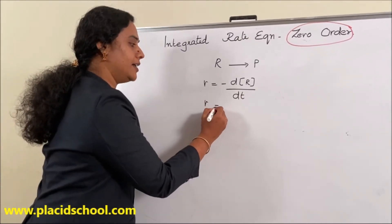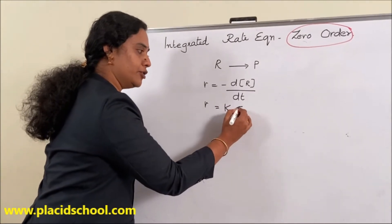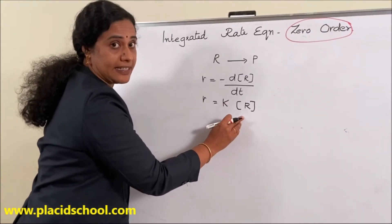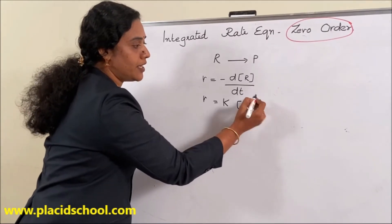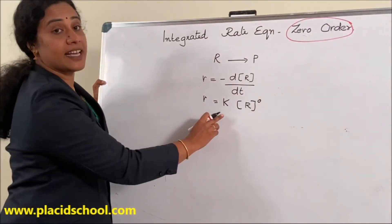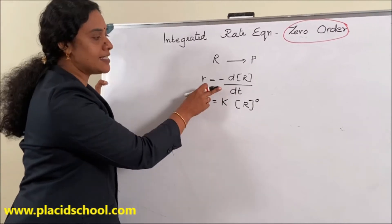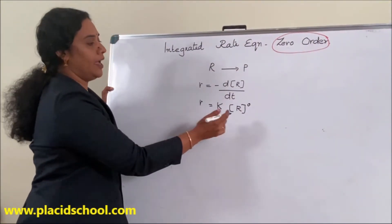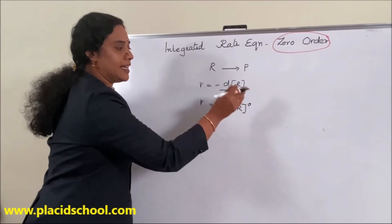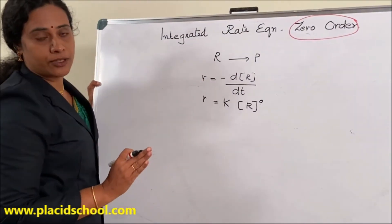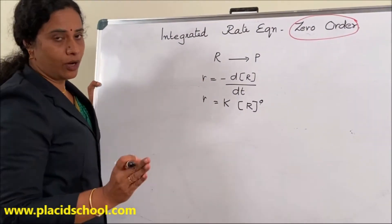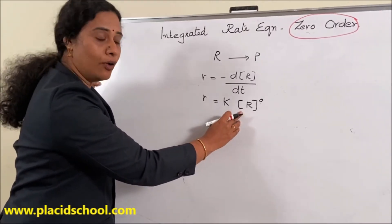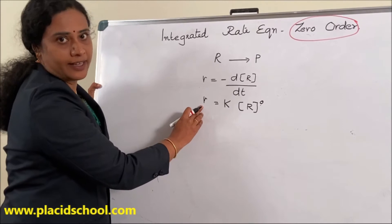Then r is equal to K into molar concentration of reactant R raised to zero. This is the rate law expression. Here the zero indicates the order of the reaction is zero, meaning the concentration of reactant has no role on the rate of the reaction.